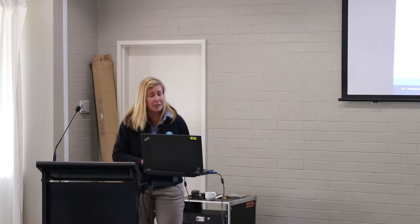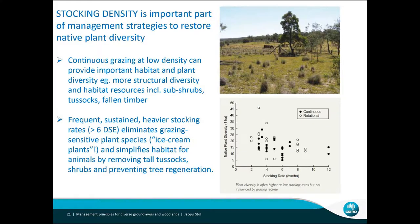More than 6 DSE typically reduced that plant diversity. The most diverse pastures tended to be continuously grazed but at these light stocking rates. The reason continuous grazing at low density can provide important habitat and plant diversity is that you end up with more structural diversity — tussocks, some shrubs. It's a bit of a messy looking paddock, but that's often really good for the diversity.